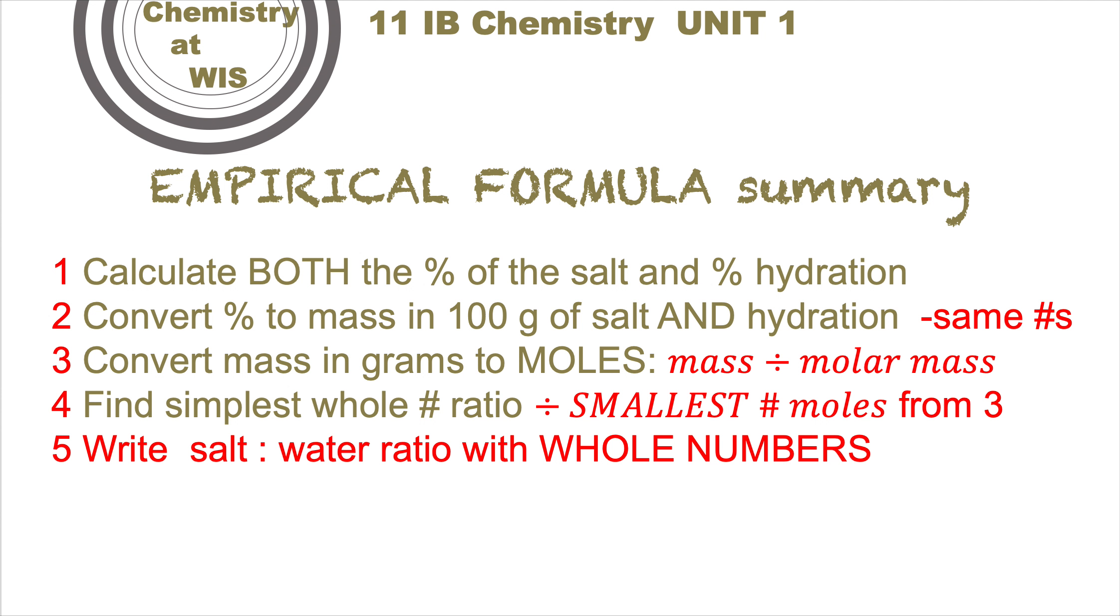Convert the mass in grams to moles by dividing by the molar mass of the particular substance. Find the simplest whole number ratio of the moles you've just discovered - divide both numbers by the smallest number, so one of them will always come out as one. Then write the salt-to-water ratio in whole numbers, and you can write the formula.